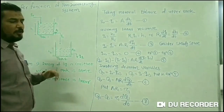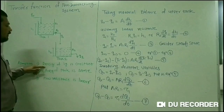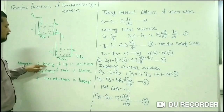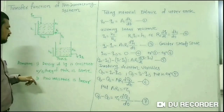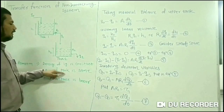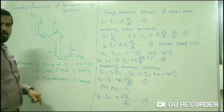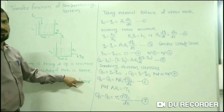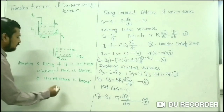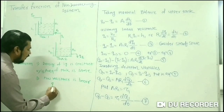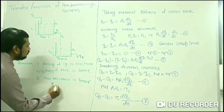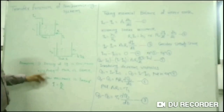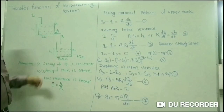Before solving this derivation, we consider a few assumptions. First, the liquid in the tank is incompressible, meaning the density of the liquid is constant. Second, the areas of both tanks are equal: A1 = A2. Third, the flow resistance is linear, meaning the outlet flow rate Q = H/R. These are the three assumptions to consider before solving this derivation.